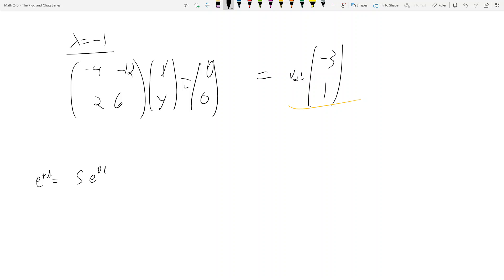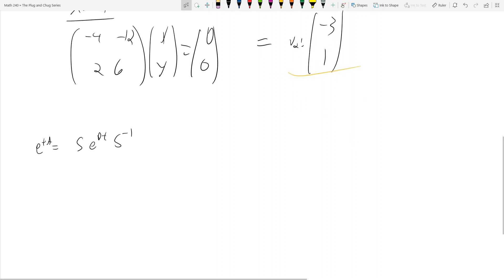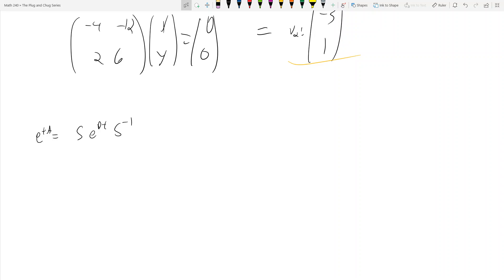But in general, if you have an eigenbasis, right, so we have V1 and V2 for a 2 by 2 matrix, so we only need 2, then e to the tA can be written as S, e to the Dt, S inverse. This looks familiar, right, because just earlier in the other video we did SDS inverse. Well, that's actually the next step. To find this guy, we actually need to find SDS inverse, and we have all the tools to do it.